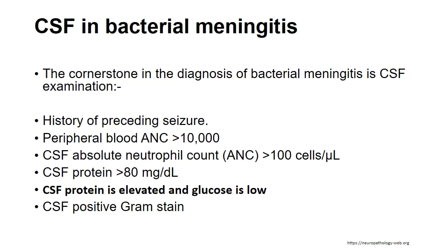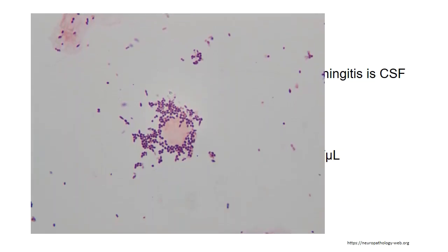Now the CSF examination in bacterial meningitis. The cornerstone of diagnosis is the CSF examination. A history of preceding seizure and a peripheral blood absolute neutrophil count of more than 10,000 are prerequisites. A CSF absolute neutrophil count of more than 100 cells per microliter and a high protein level of more than 80 mg/dL is required, with a low glucose level and a positive gram stain. Here we see gram-positive cocci present singly and in clusters in the CSF. A detailed CSF examination will be held in subsequent classes.